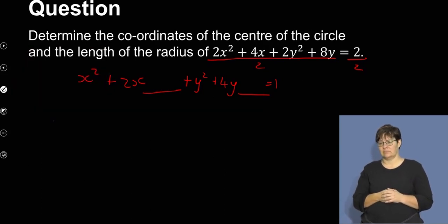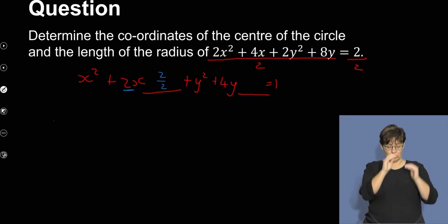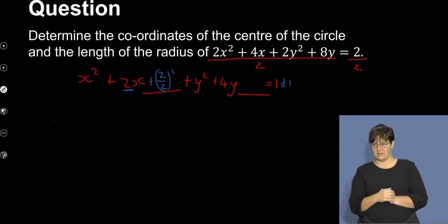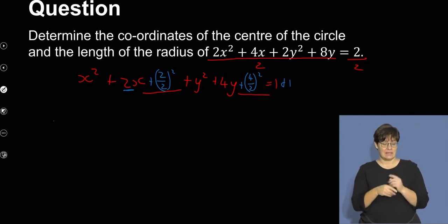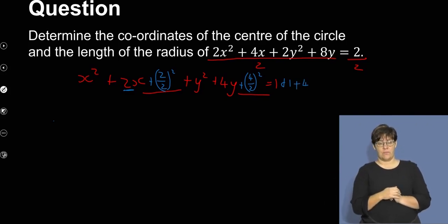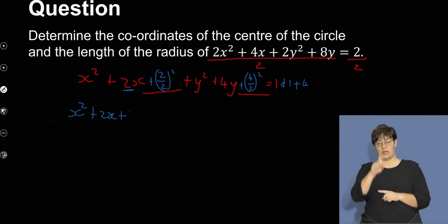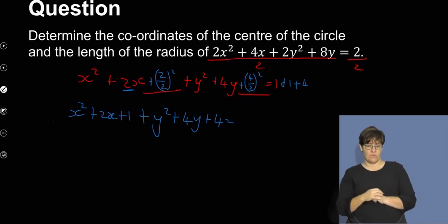To complete the square for x, I take the coefficient of x, divide by 2, square it, and add it to both sides: 2 over 2 is 1, 1 squared is 1, so I add 1 on both sides. For y, I divide 4 by 2 to get 2, square it to get 4, and add 4 on both sides. That leaves me with x squared plus 2x plus 1 plus y squared plus 4y plus 4 equals 6.